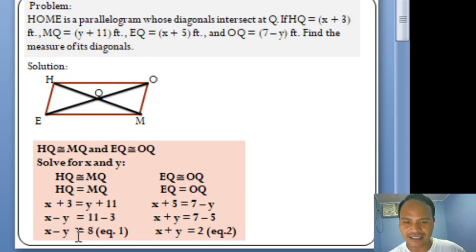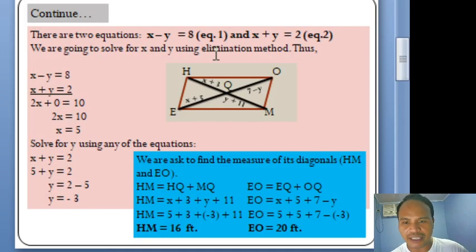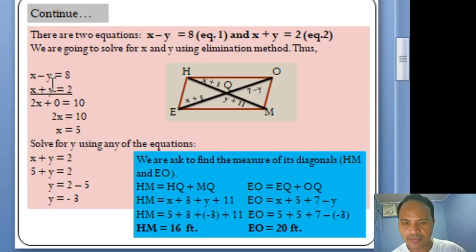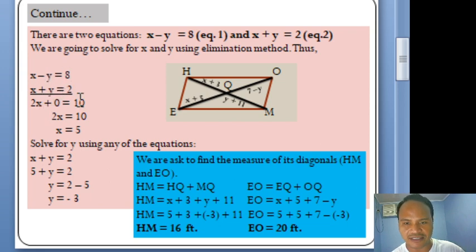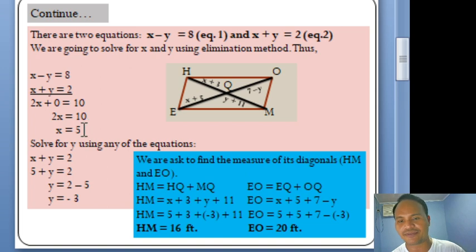To solve for X and Y, we use the elimination method. Adding the two equations directly cancels the Y terms: X + X = 2X, −Y + Y = 0, and 8 + 2 = 10. Dividing both sides by 2 gives X = 5.